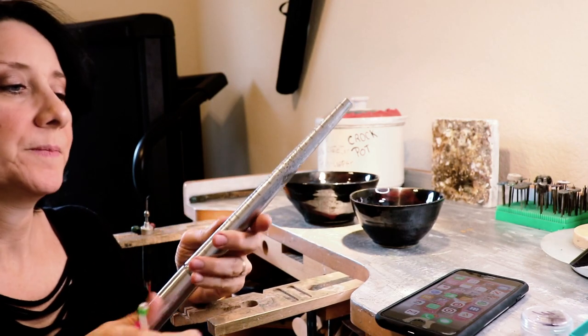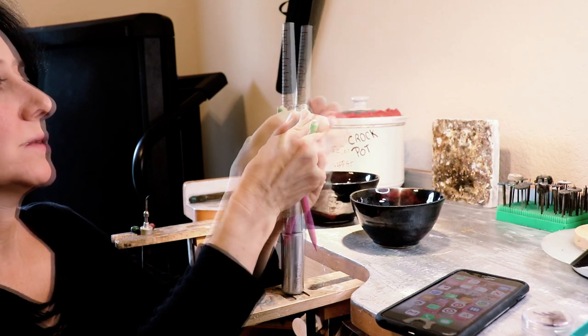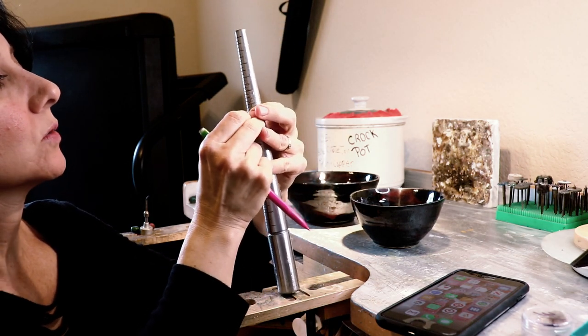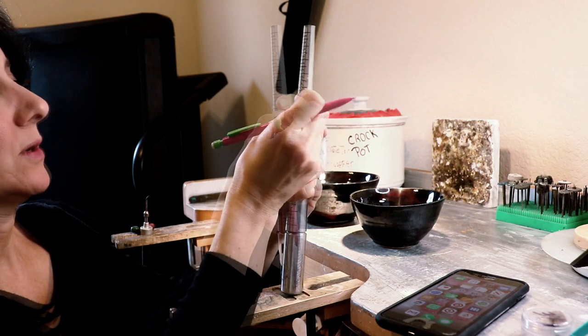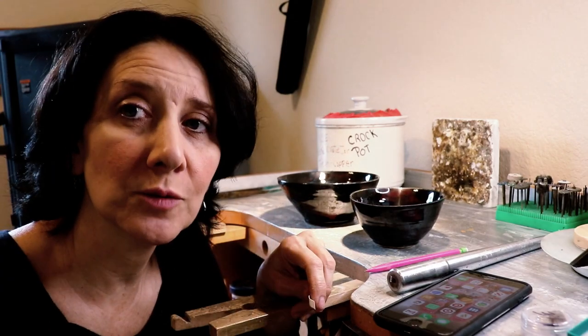I have my ring mandrel and I'm going to wrap a strip of paper around the face where it's size seven and make a marker where that overlap happens. I'm going to wrap it around the six and a half marker. I need to remove two millimeters.